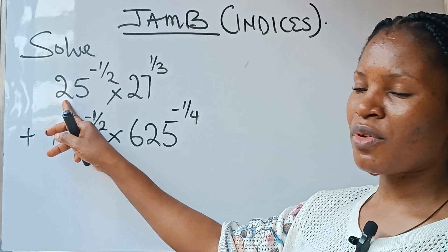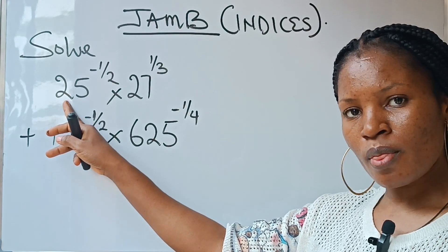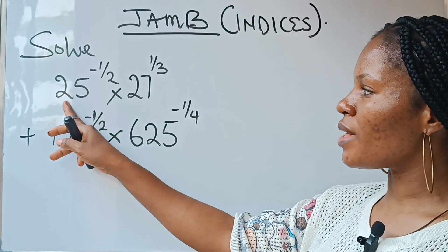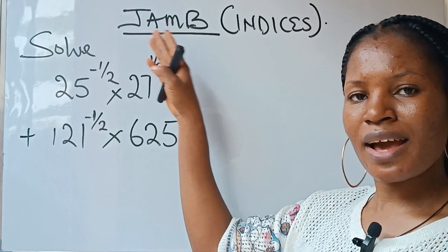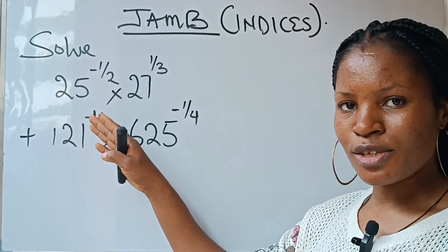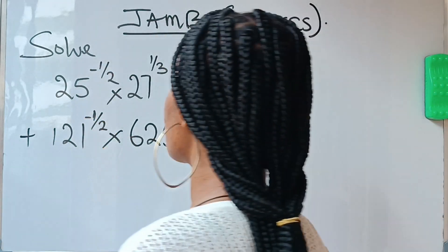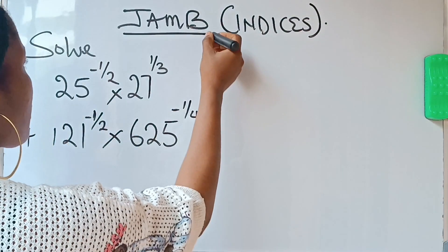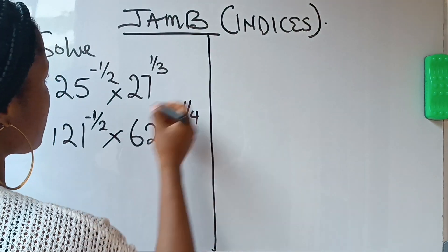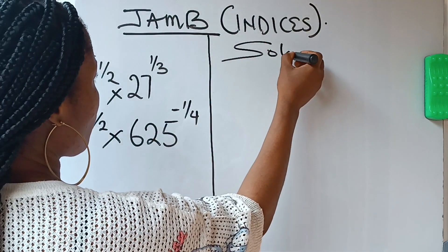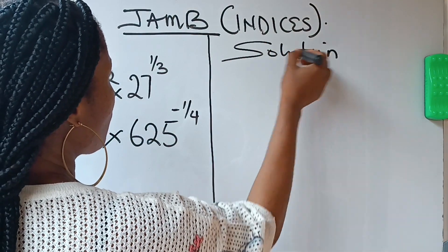For example, 25 can be written as 5 raised to the power of 2. When you do that, you need to see if it's affecting anything. Let's go ahead and do this. So this is the solution.